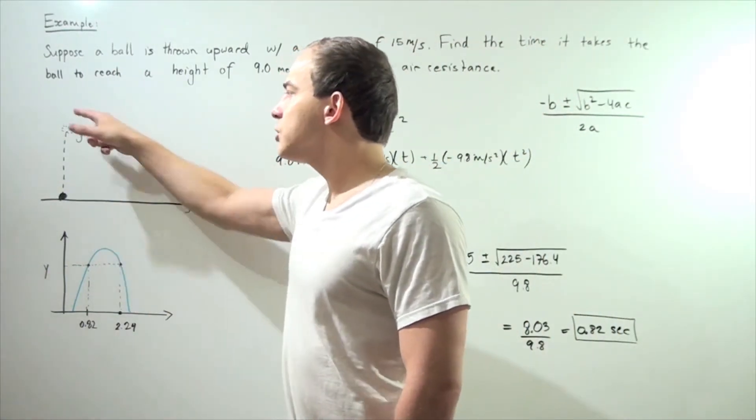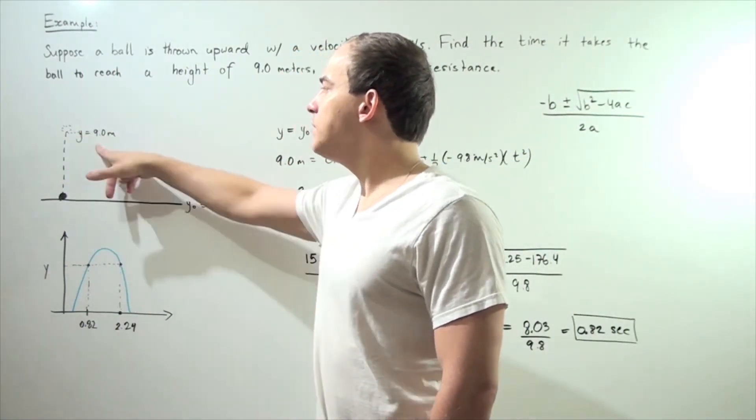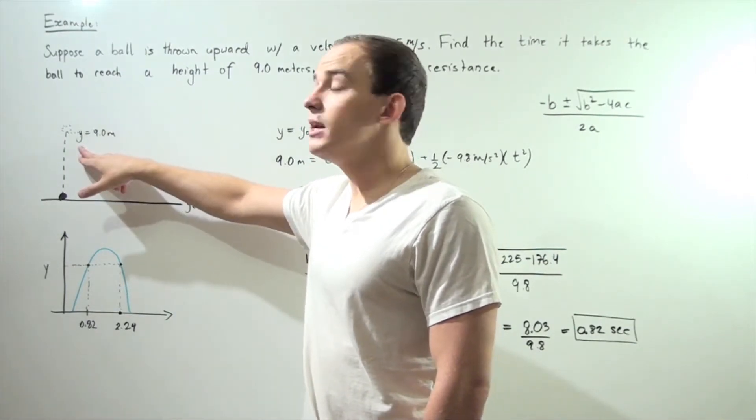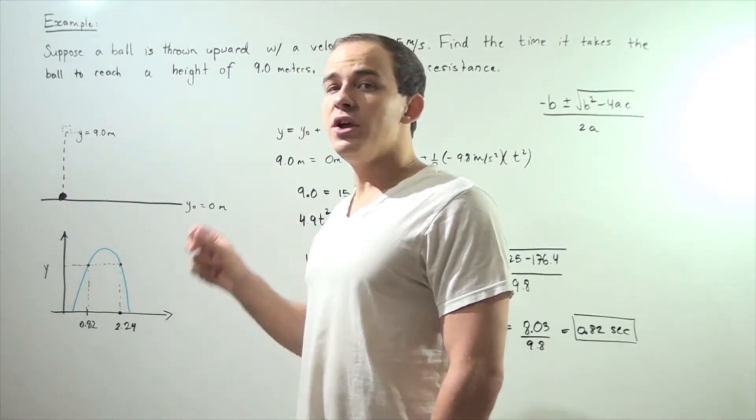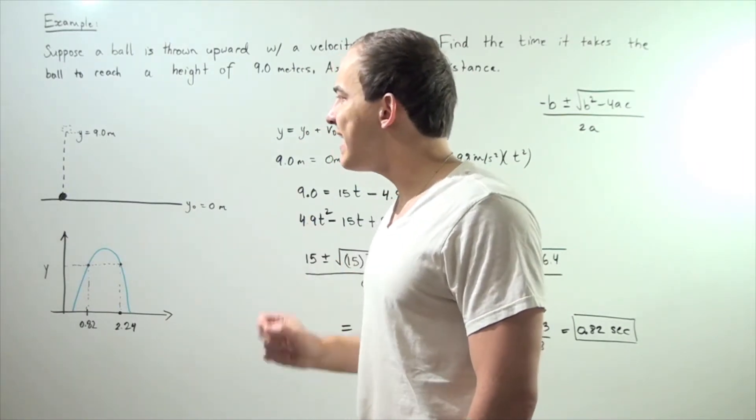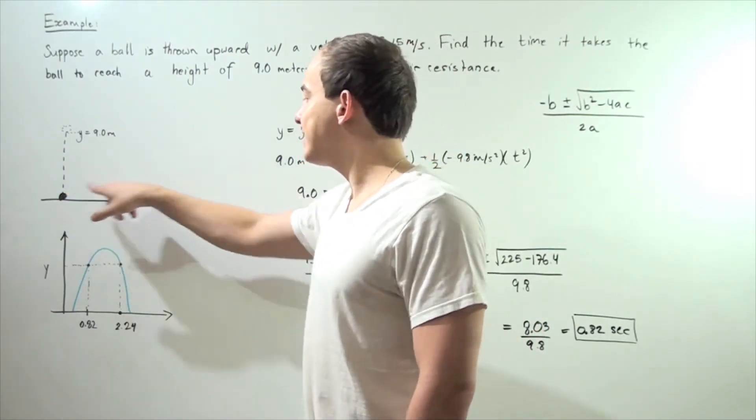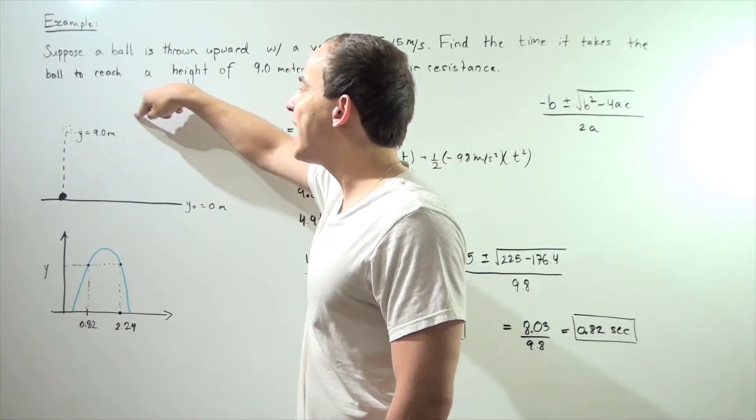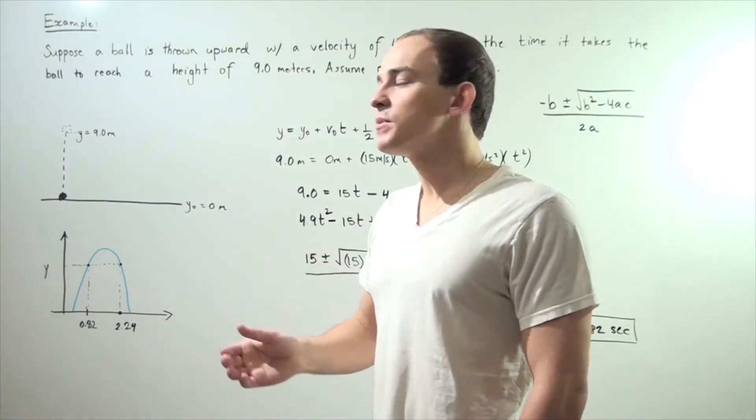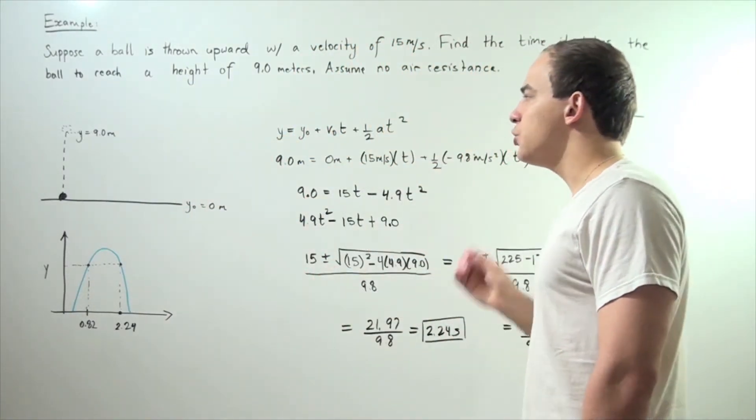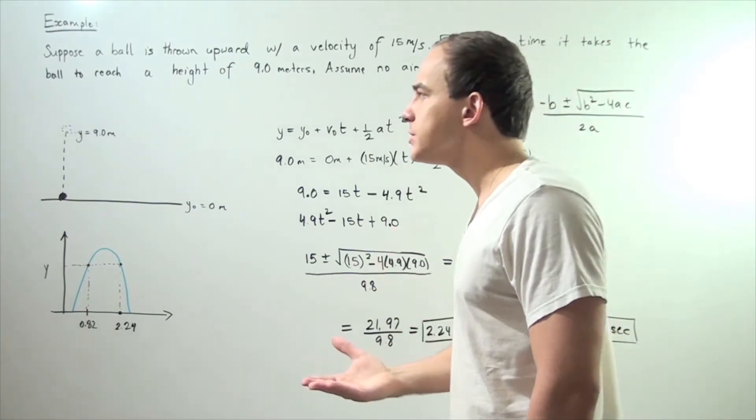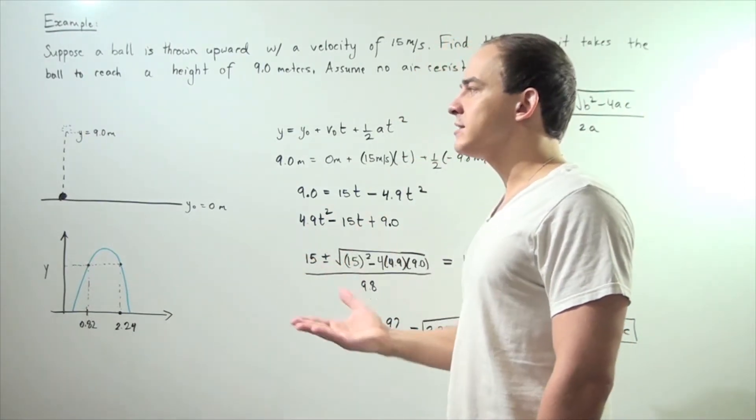Eventually it will reach a height of 9 meters, so let's set our height y to be 9 meters. We want to find how long it takes the ball to go from our height 0 to height 9. So we're looking for the time. That means we need to use one of the four equations for motion under constant acceleration.